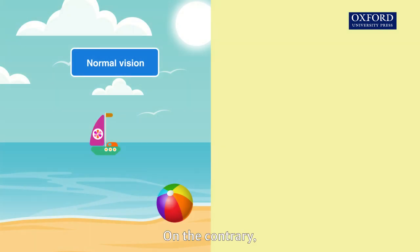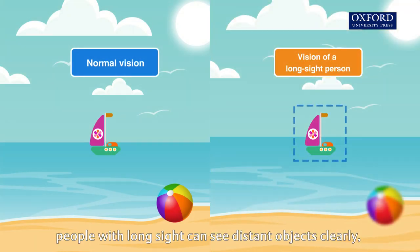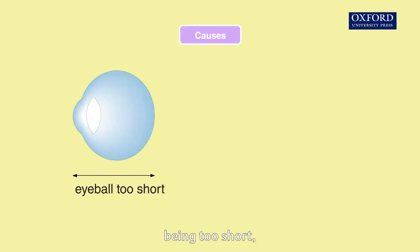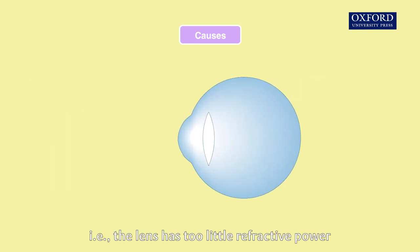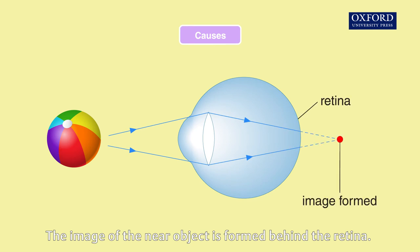On the contrary, people with long sight can see distant objects clearly but not near objects. Long sight may be caused by the eyeball being too short or the lens being too thin — that is, the lens has too little refractive power. The image of the near object is formed behind the retina.